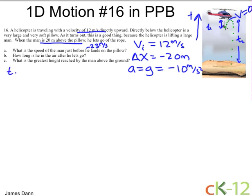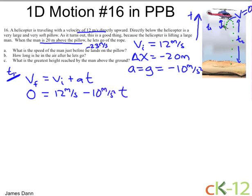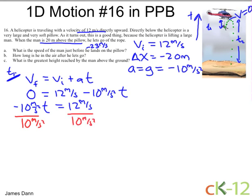Let's first solve for t1. We'll use v_final equals v_initial plus at. At the highest point, the final velocity is zero. We know the initial is 12 meters per second, and gravity is negative 10 meters per second squared. So negative 10 times t equals negative 12 meters per second. Dividing both sides by the acceleration of gravity gives t1 equals 1.2 seconds. Notice how the units cancel as well.